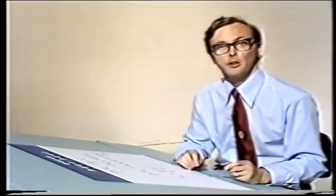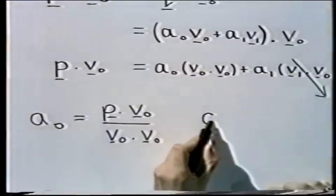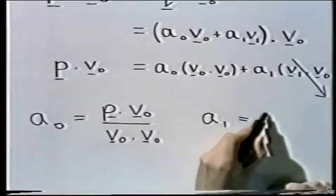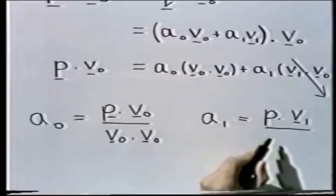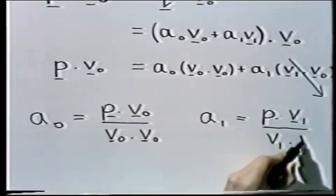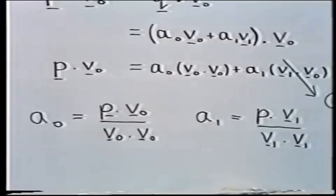So that's A0, found by looking at the first orthogonality relation. The obvious thing now is to look at the second orthogonality relation, which gives us A1. Going through the same sort of calculations, we end up with a very similar answer: A1 is equal to P dot V1 over V1 dot V1. A very similar sort of equation. So those are the Fourier coefficients A0 and A1.